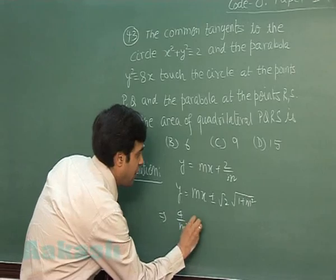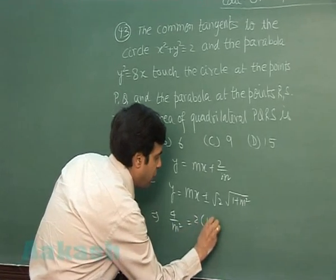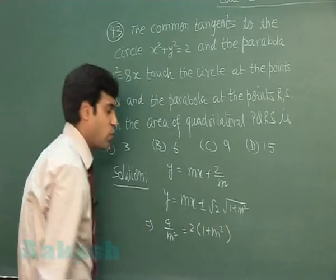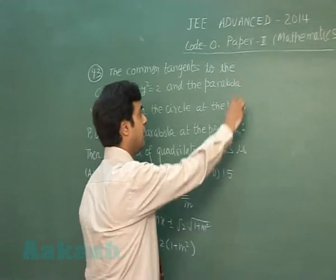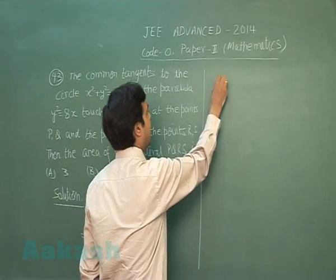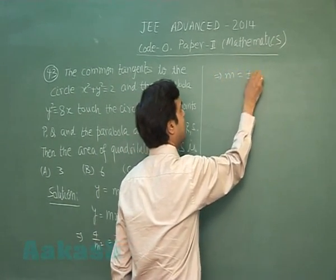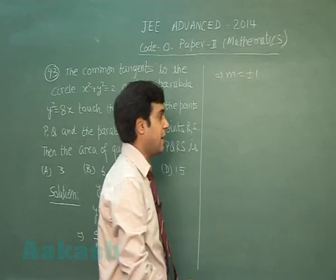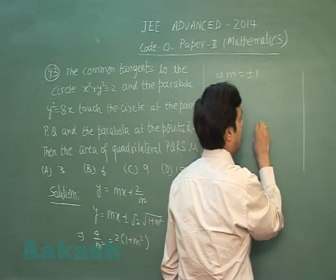Simplifying we get m = ±1. Correct, the geometry.